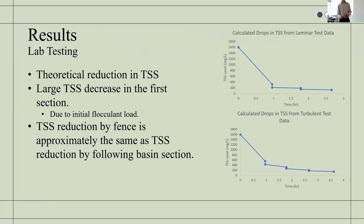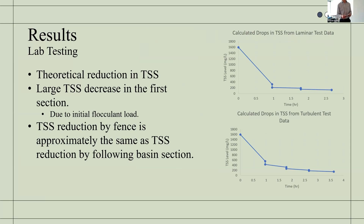The main measure of success was whether there was a reduction in total suspended solids (TSS). The measured results from the laminar and turbulent tests showed significant reductions in TSS. These initial results were used to calculate theoretical reductions in a sediment retention basin, as shown in the figures on screen. Both graphs show large reductions in TSS over the first section, due to heavy particles being dropped out during that initial flocculation process. This continues to slow as the sediment particles become smaller and therefore harder to drop out of suspension.